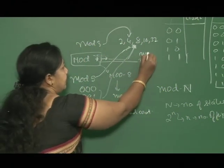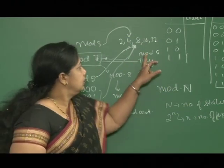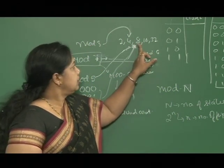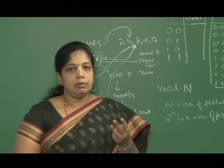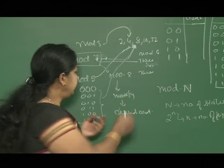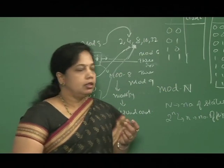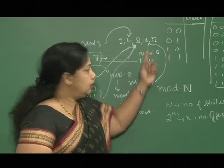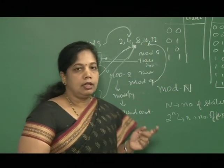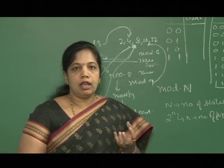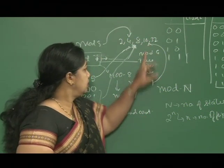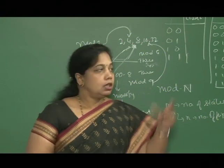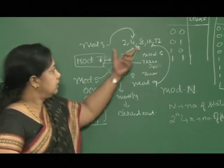For mod 6, the nearest count greater than 6 is 8, so I use 3 flip-flops. For mod 9, the nearest natural count is 16, which requires 4 flip-flops — so I use 4 flip-flops for the mod 9 design. This is how we design different mod counters other than natural counts by deriving from the nearest natural count.